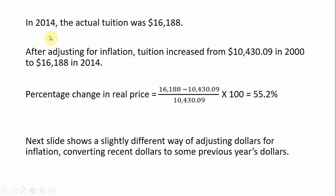However, if we look at the actual tuition in 2014, it was actually $16,188. So after adjusting for inflation, tuition increased from $10,430.09 in 2000 to $16,188 in 2014. This is a whopping 55% increase — a real, inflation-adjusted percentage increase.